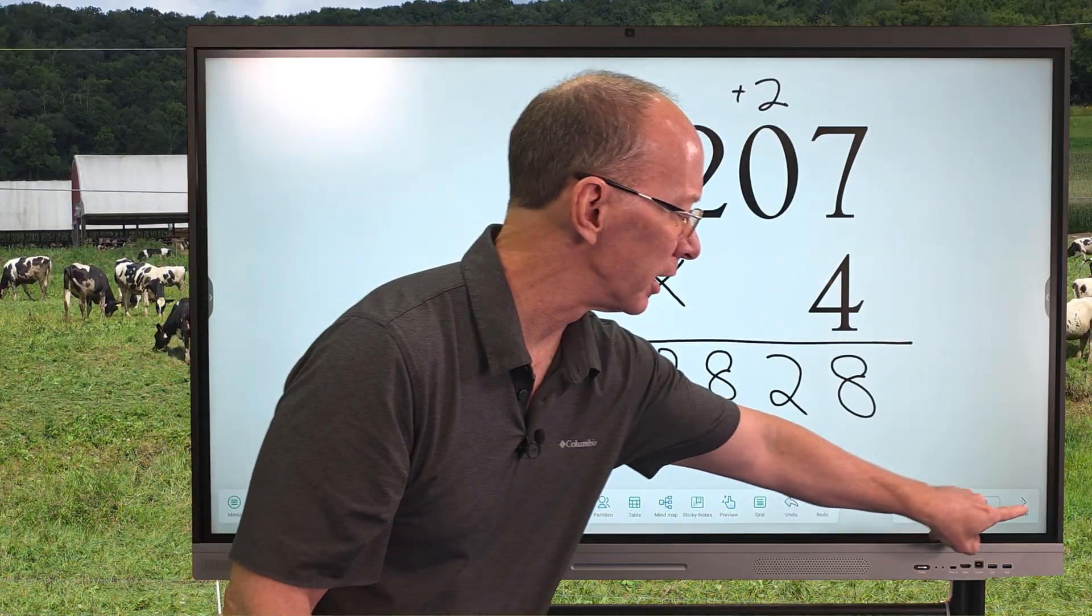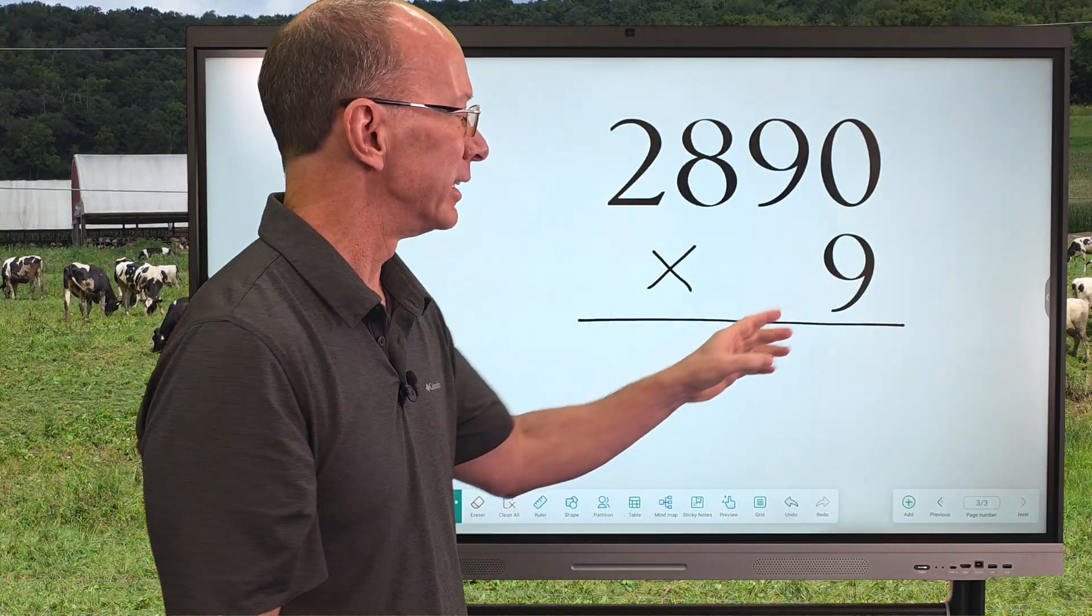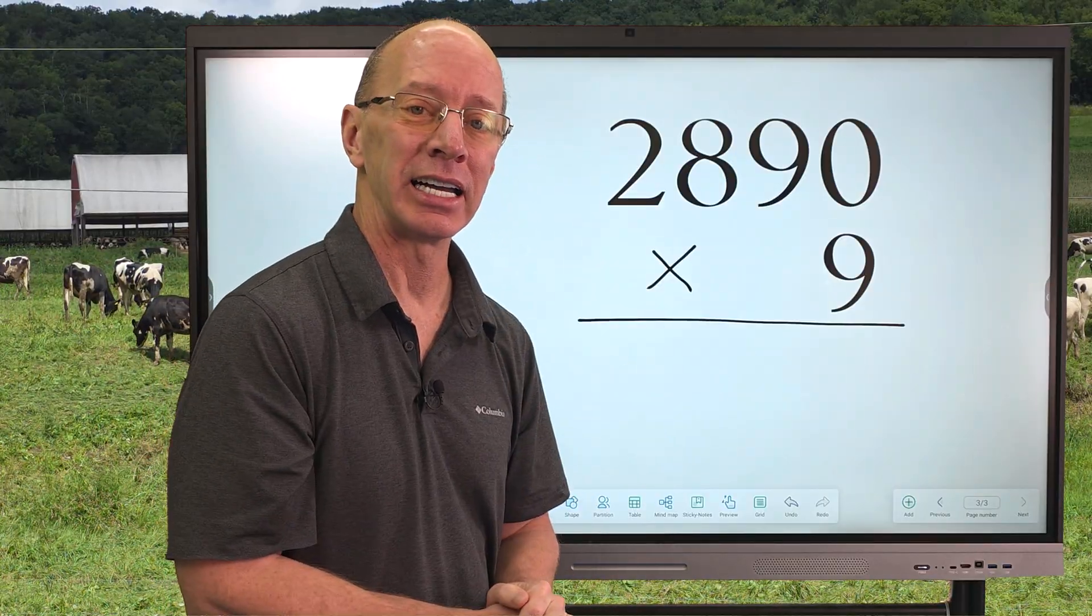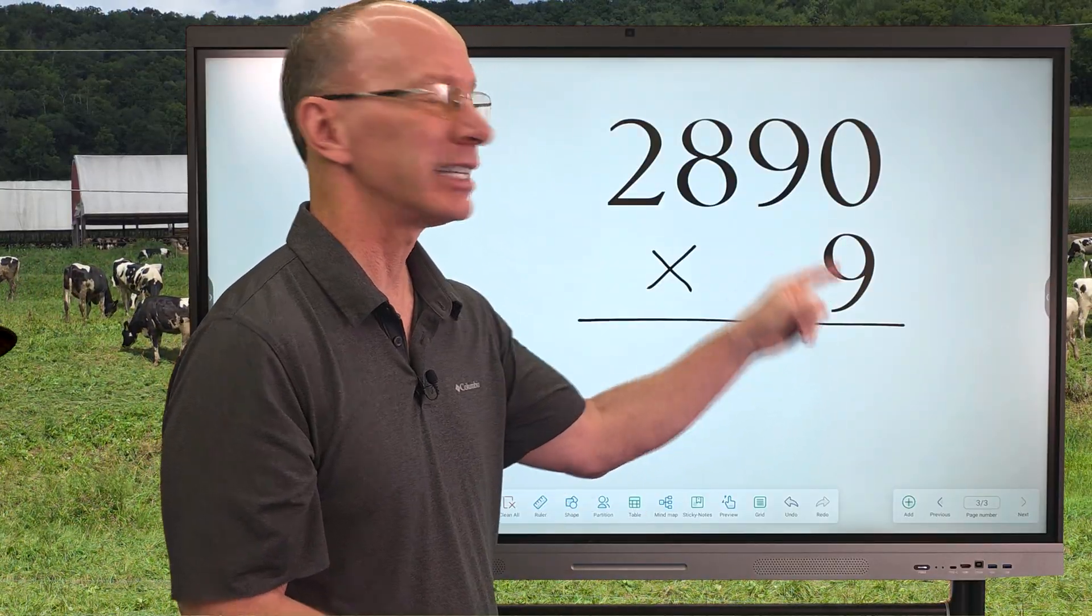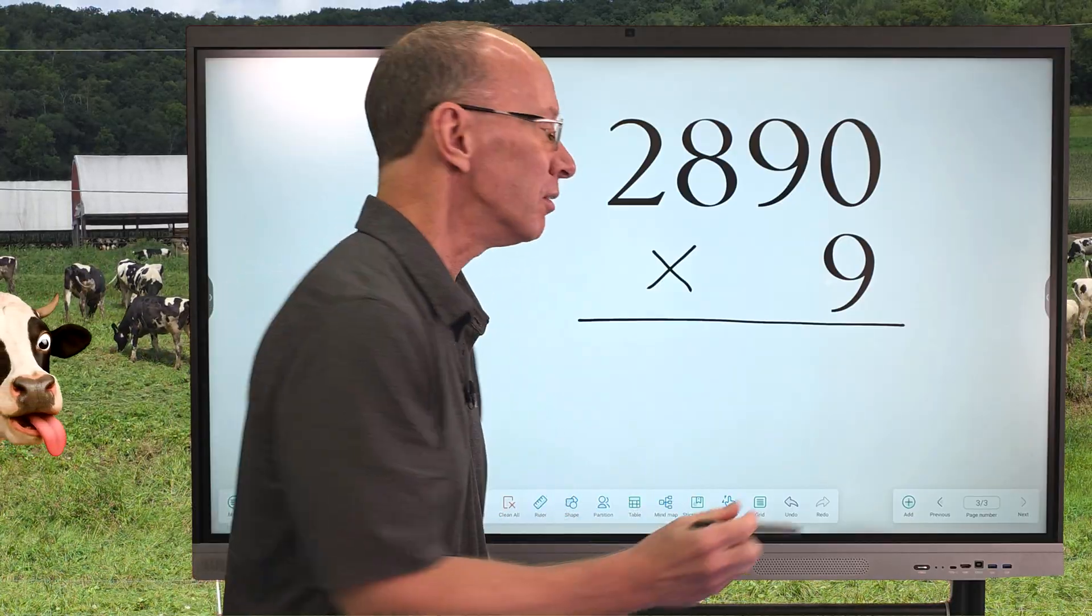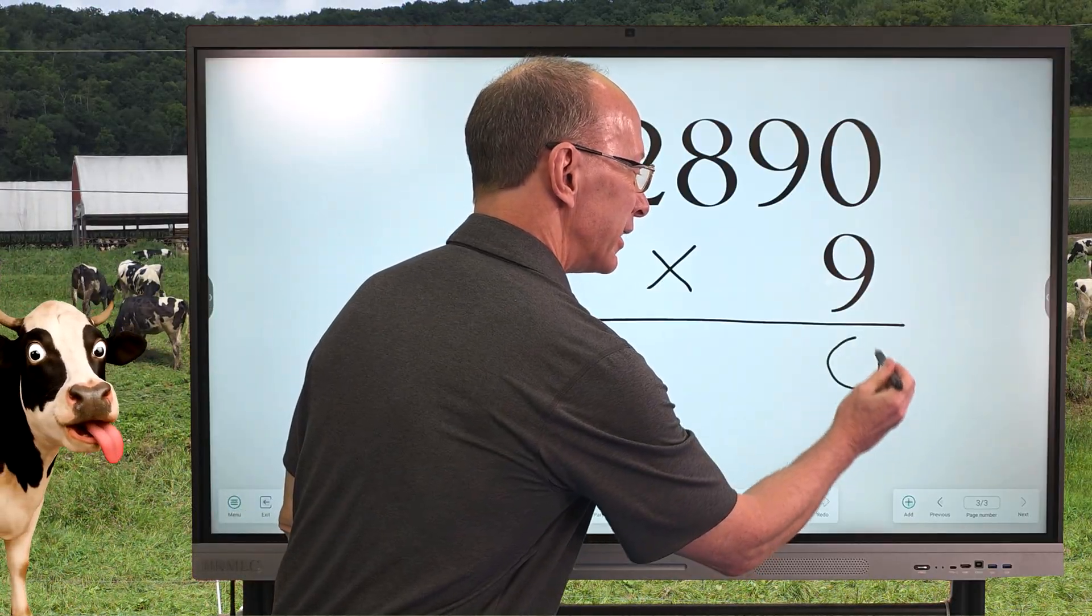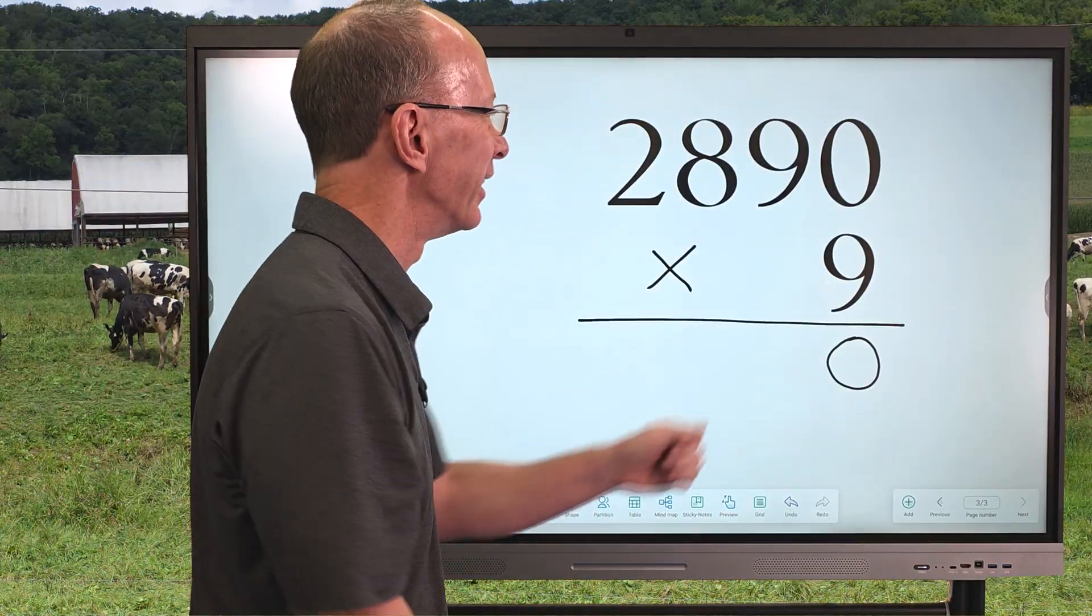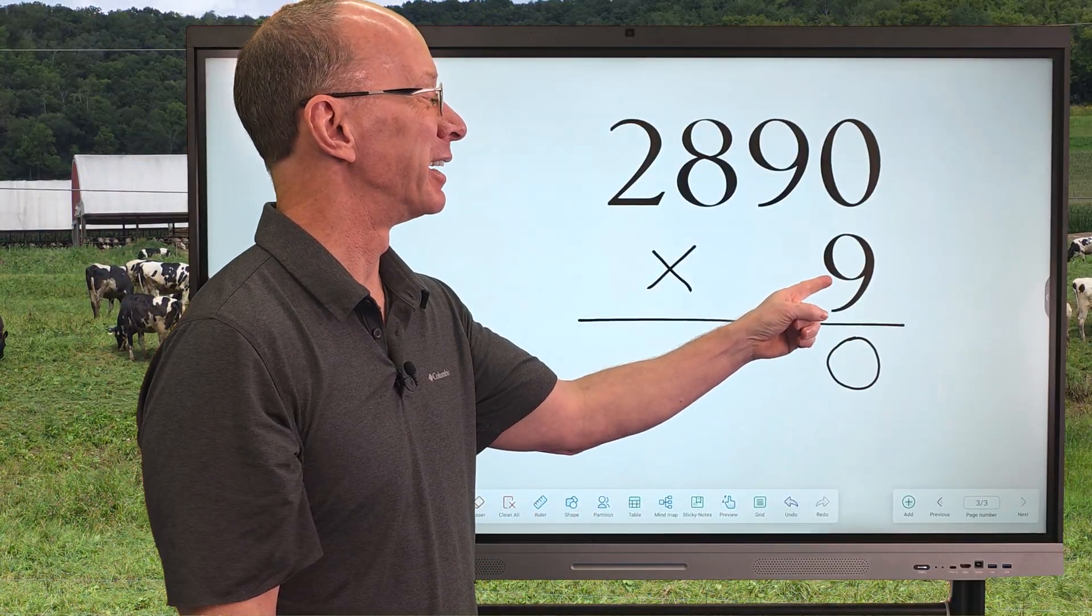Alright, let's try one more here. Now we have 2,890 times 9. Let's go ahead and multiply 9 times 0 is 0. So, I'm going to put 0 right there. I'm hearing all the cows in the background there.